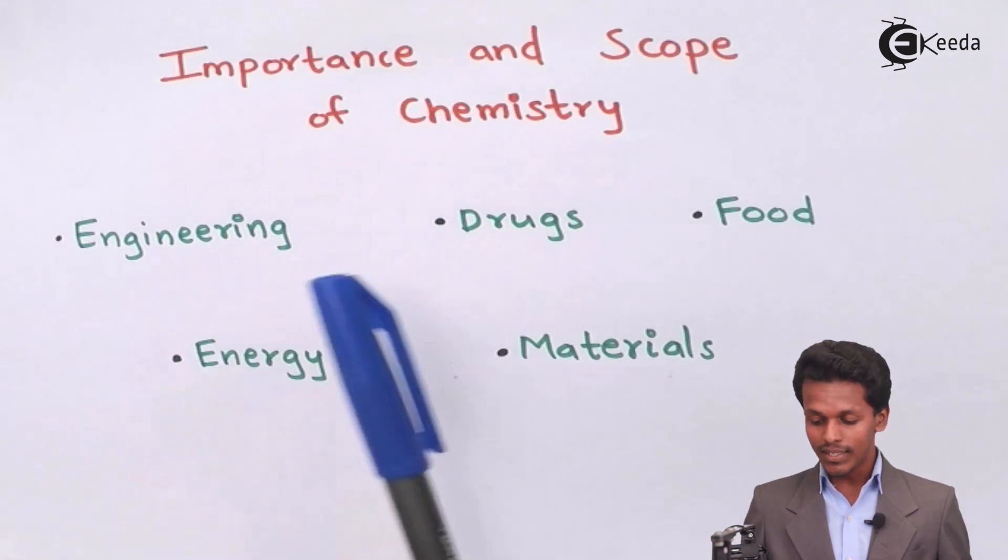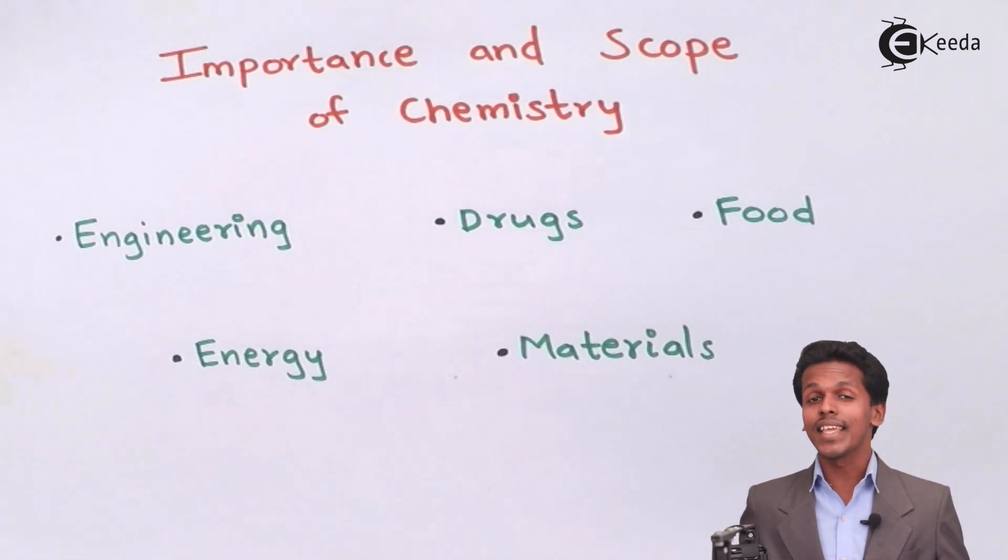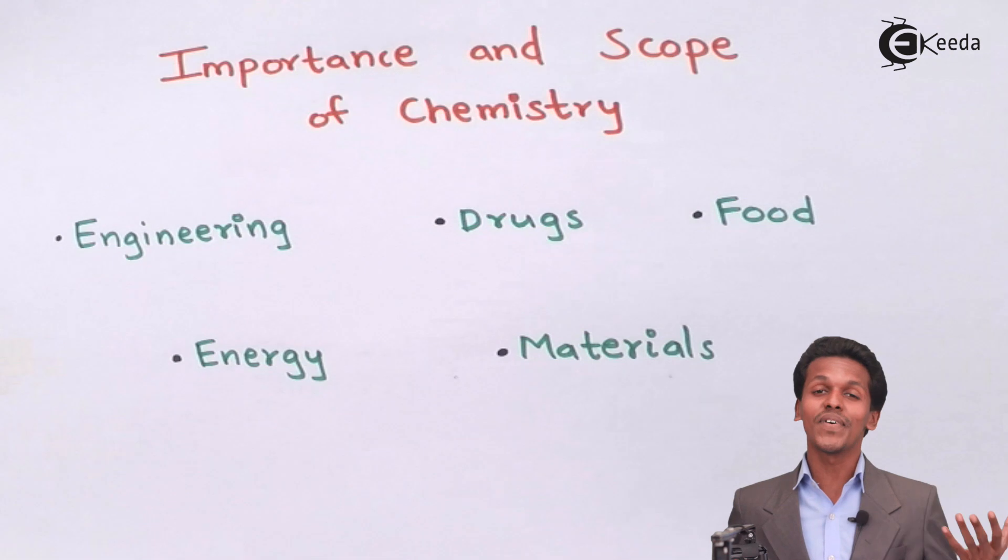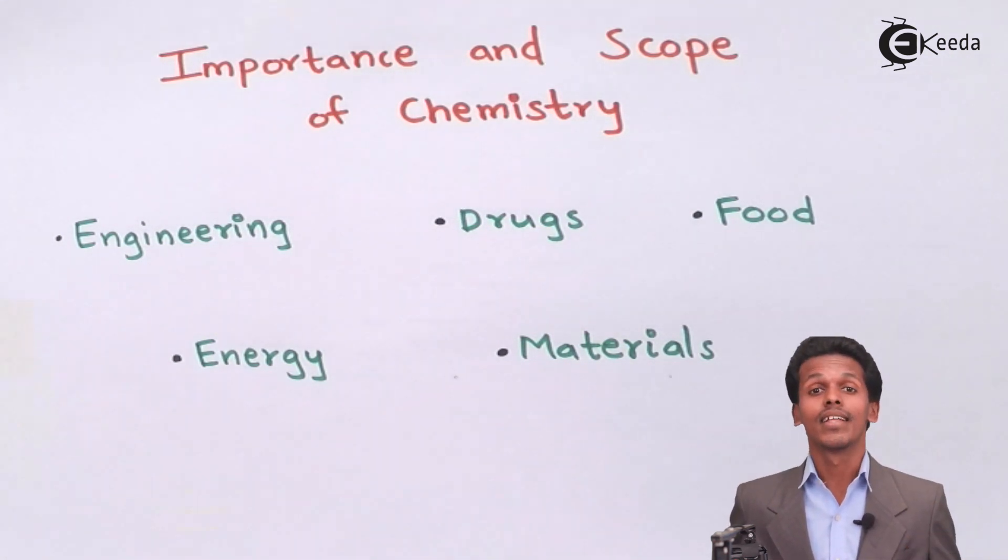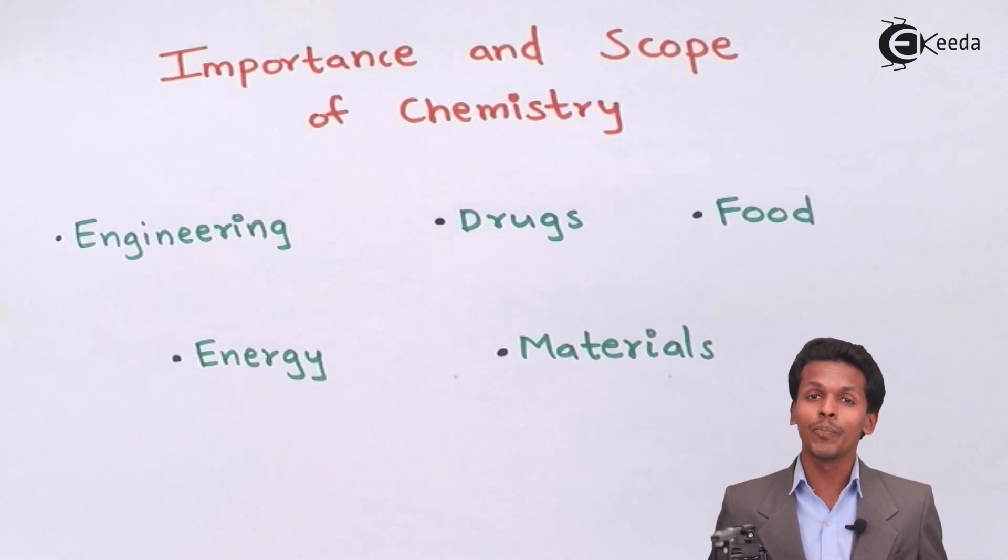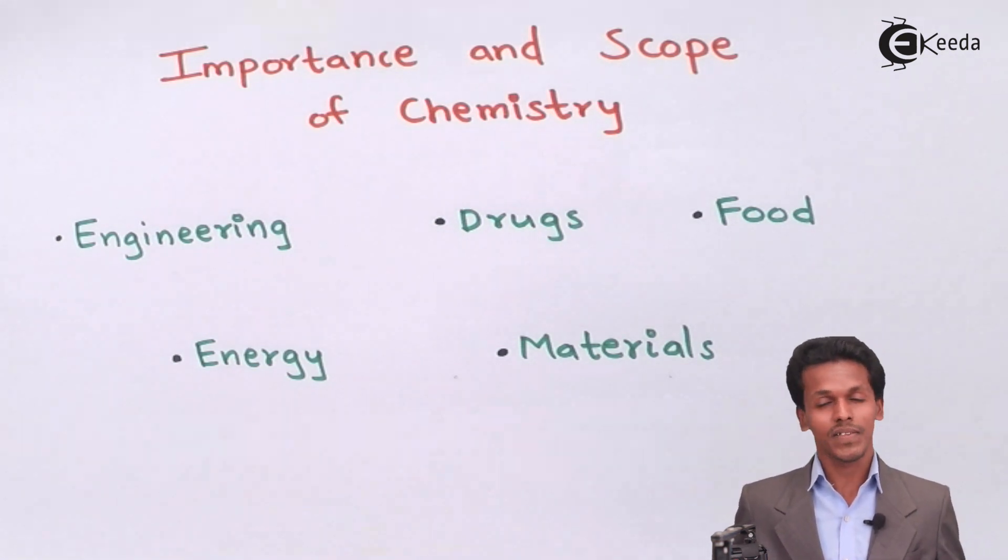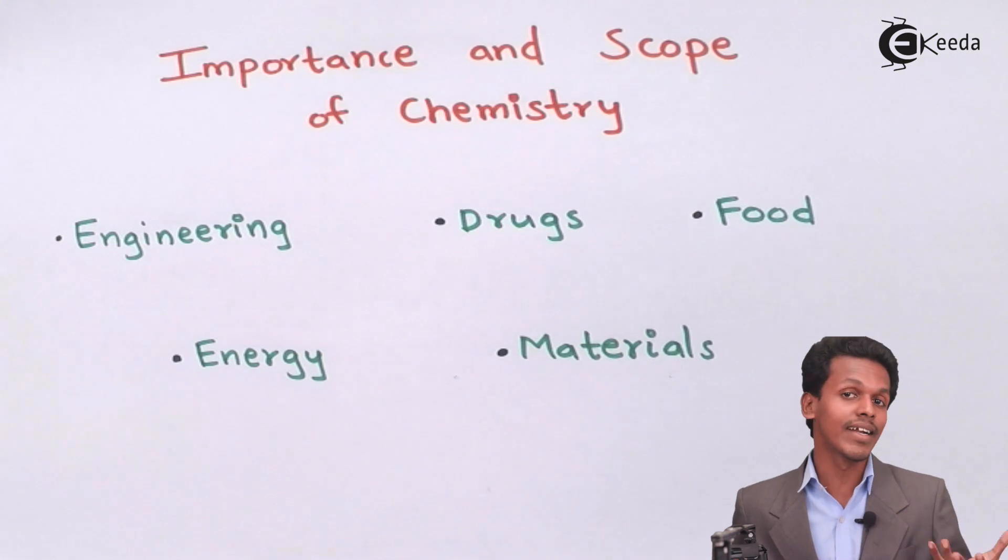Talking about drugs, when we think about chemicals, the first thing that clicks in our mind is drugs and medicines that we use in our day-to-day life. If we understand the compositions of the chemicals we are using, it would be very advanced for us to treat many kinds of diseases that people face nowadays. Therefore, there is great importance and scope of chemistry in drugs also.